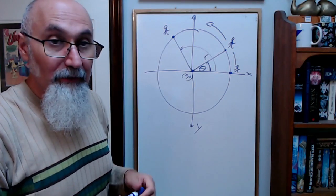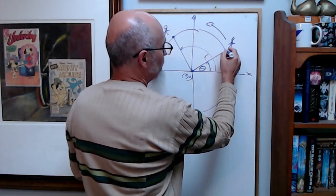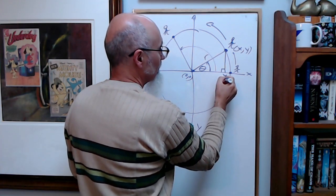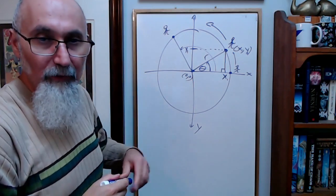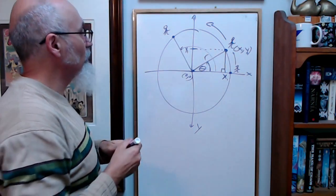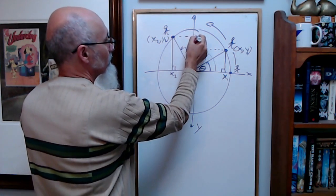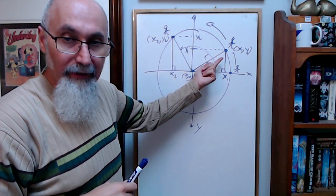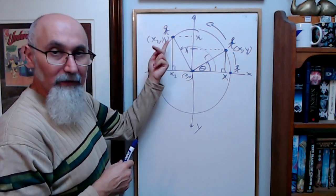There's another way I could tell you where to go on a circle — using a coordinate system with X and Y coordinates. If we draw a right-angle triangle here, then this point is your X1 and Y1. So instead of saying go 30 degrees along the circle, I could say go to coordinate (X1, Y1) and you end up there, or go to coordinate (X2, Y2) and you end up there. So I can give you an angle and the radius, or I can give you two coordinates — same result.